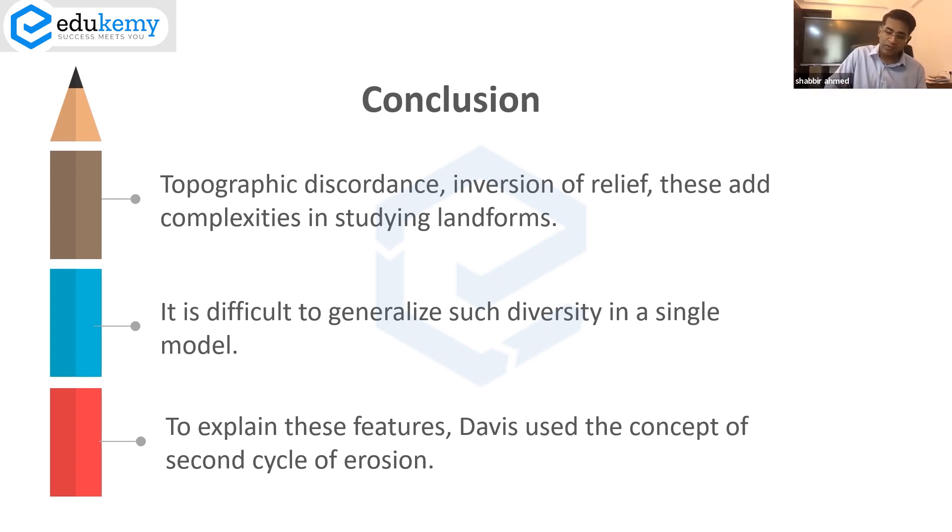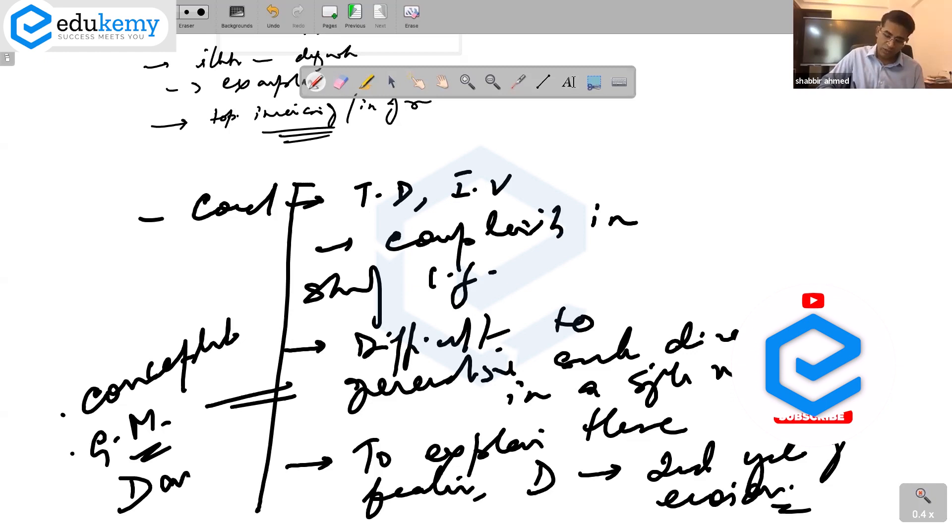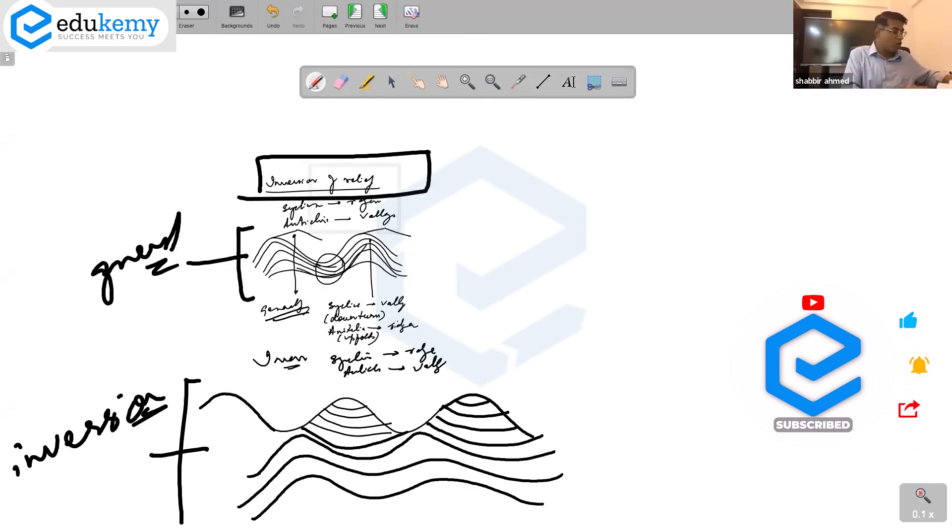Somewhere on the conceptual side, you are using terms from geomorphology, you use terms from Davis, and you finish that. If you want to look up something on inversion of relief, you can look up page number 178.